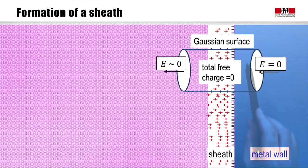We can learn more about the sheath by drawing a Gaussian surface which straddles the sheath. On the right-hand side, the electric field in metals is zero. The electric field in plasmas is very small because it's quasi-neutral. Therefore, we see that the total free charge in the sheath is zero. The positive charge in the sheath layer is equal and opposite to the surface charge of the electrons on the metal surface.